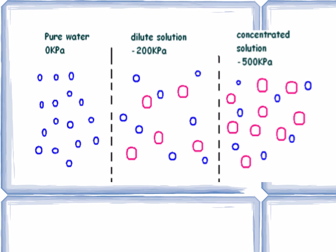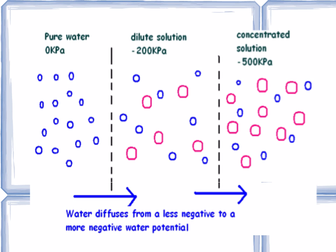Looking at different solutions: pure water at zero kilopascals on the left, a dilute solution at minus 200 kilopascals, and a concentrated solution at minus 500 kilopascals. Water moves from a high water potential to a low water potential — so it moves from pure water to the dilute solution to the concentrated solution.